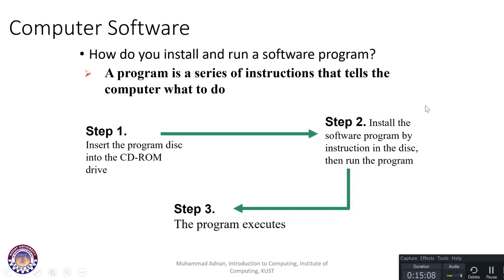We also discussed how to install and run a software program. There is a difference between downloading and installing — you first download a file, then double-click to install it, then run it. A program is a series of instructions that tells a computer what to do. Traditionally you would insert a program disk into a CD-ROM drive, but today we mostly download software from the internet or from a USB flash drive.